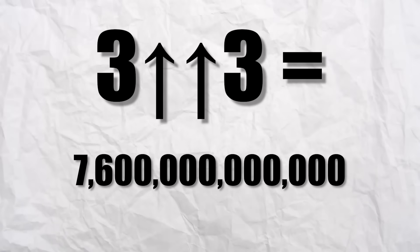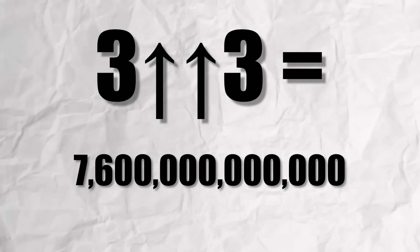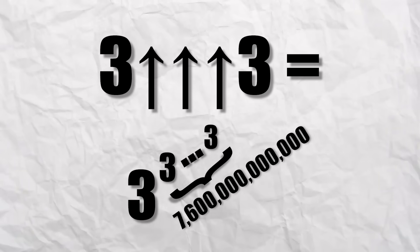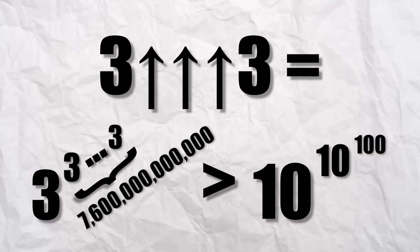This means that with just 3 arrows, we have a stack of 7.6 trillion 3s, which is already unfathomably larger than a Googleplex.